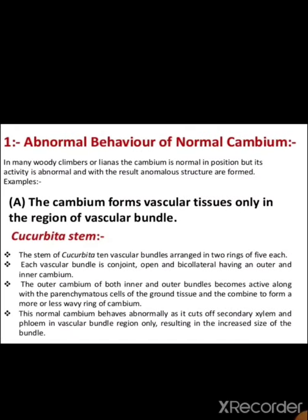We first study various examples of abnormal behavior of normal cambium. In many woody climbers or lianas, the cambium is normal in position but its activity is abnormal. This means the cambium is in a normal position but behaves abnormally, resulting in anomalous secondary structures being formed. This type of growth is known as abnormal behavior of normal cambium.